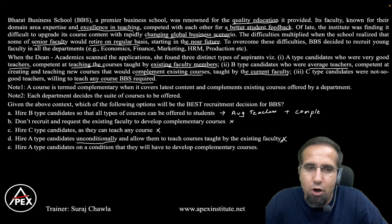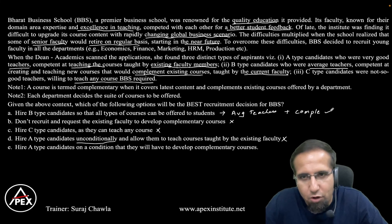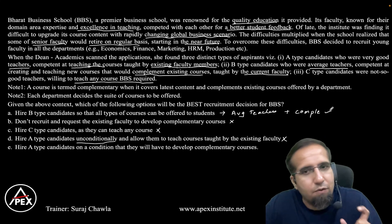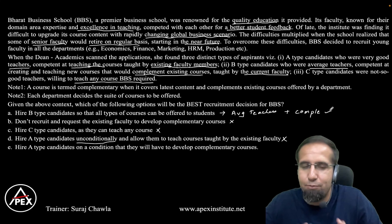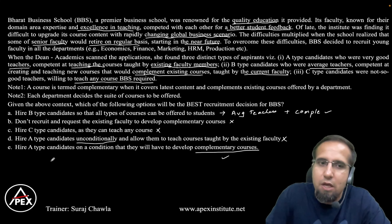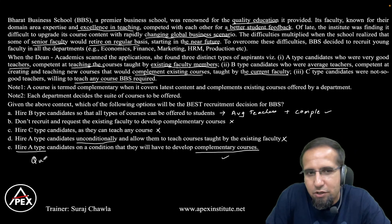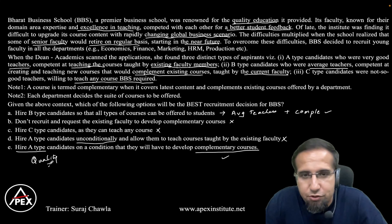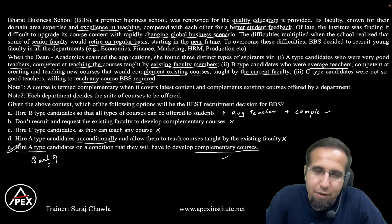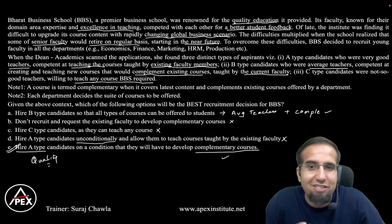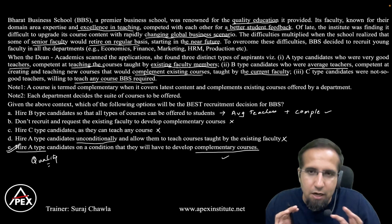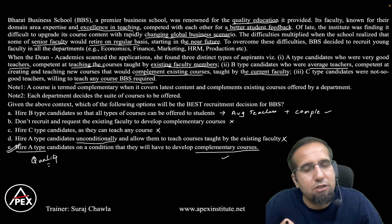This is where the best balance is struck. Comparing option A and option E: option A solves the complementary courses problem since Type B can make complementary courses, but Type B are average teachers which conflicts with our vision of quality teaching. Option E puts a condition that they must develop complementary courses, so the institution gets complementary courses while hiring Type A faculty ensures teaching quality is not compromised since they are very good teachers. Therefore, option E is the best recruitment decision.